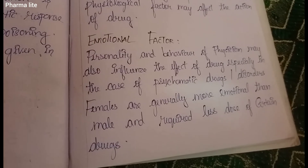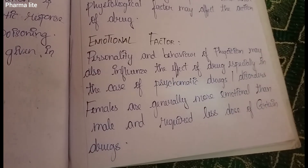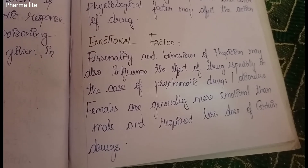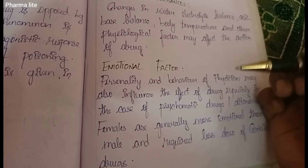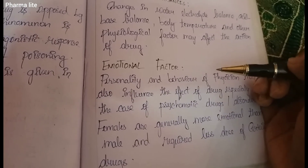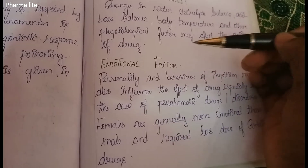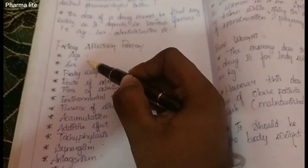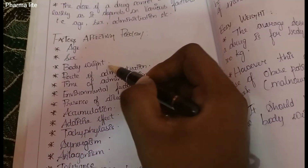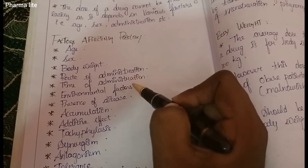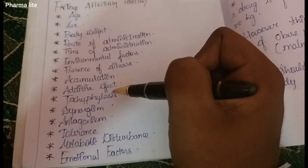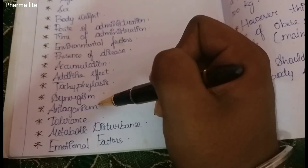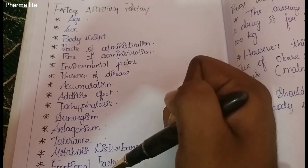This is a very important factor. In summary, the factors affecting Posology include: age, sex, body weight, route of administration, time of administration, environmental factors, presence of disease, accumulation, additive effect, tachyphylaxis, synergism, antagonism, tolerance, metabolic disorders, and emotional factors.